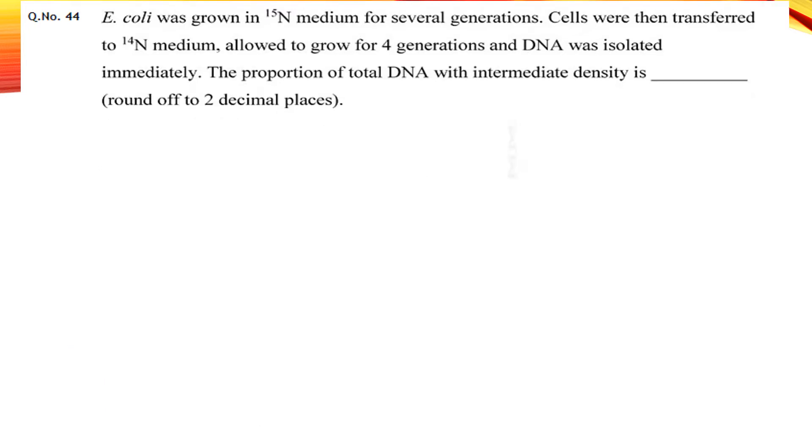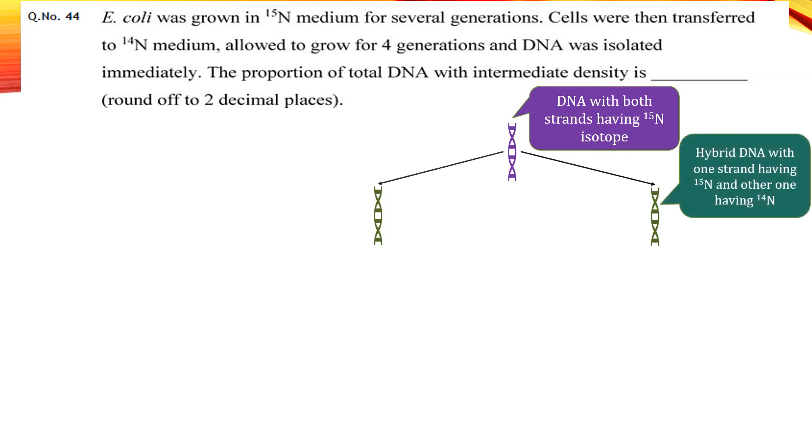If we start with a single DNA molecule, in the very first generation it will give you 2 hybrid DNA strands - one with N15 and another with N14 isotope. This is because DNA is semi-conservative in nature.